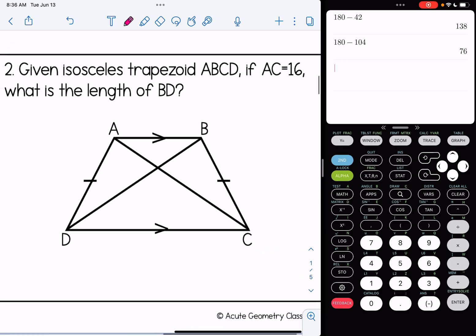Number two, given isosceles trapezoid ABCD, if AC is 16, what is the length of BD? Well, AC in this picture you could see is one of the diagonals. And in an isosceles trapezoid, the diagonals are congruent.